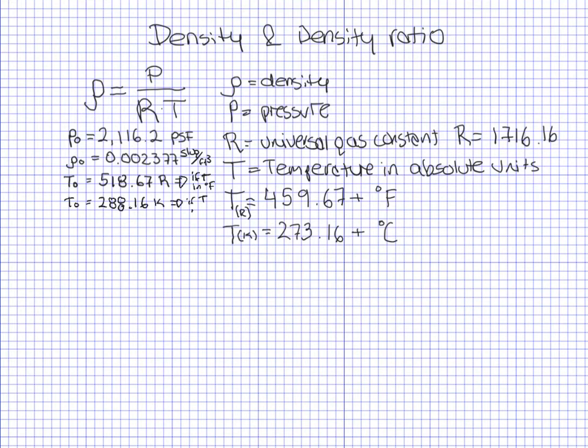Or T0 is 288.16 Kelvin if temperature was given in degrees Celsius. For this course we're going to be using Fahrenheit, but in aviation sometimes you're going to have the temperature in degrees Celsius, so you have to convert to absolute temperature, to Kelvin.